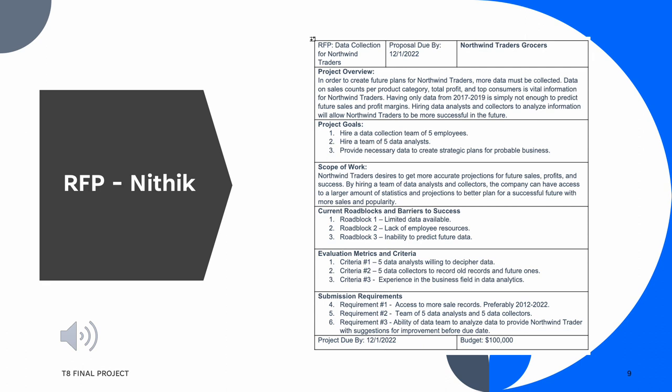Our current roadblocks are the limited data availability, the lack of employee resources, and the inability to predict future sales. We will need five data analysts willing to decipher data, five data collectors to record old and future records, and experience in business and data analytics. We will also need access to more sales records, preferably from 2012 to 2022, and the ability of a data team to analyze data and provide Northwind Traders with suggestions for improvements before the due date of December 1, 2022. Our budget would be $100,000.